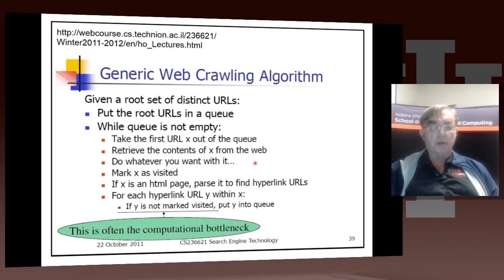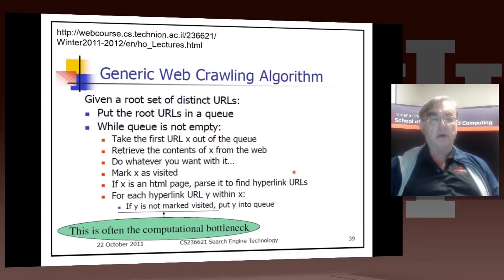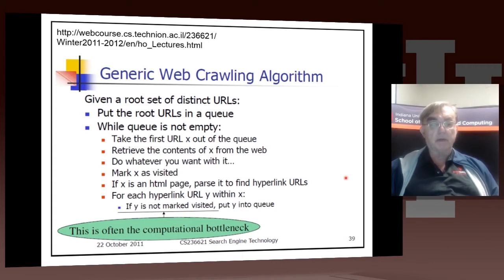It looks at the queue of URLs to visit, takes the first URL from the list, takes it out from the queue, marks it as having been taken, and goes off and tries to find it. It finds the contents of whatever's at that URL, does whatever you want with it, brings back the whole content into your pipeline, which breaks it up into tokens, does the stemming and all that type of stuff. Then you mark that URL as being visited.